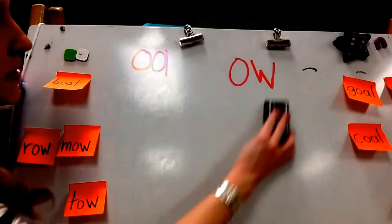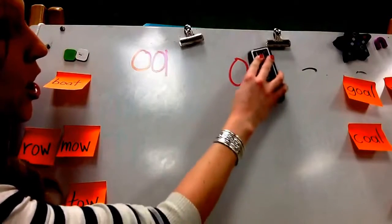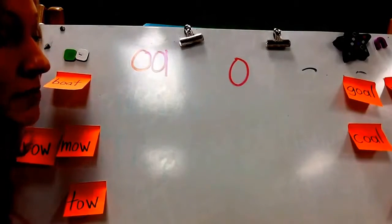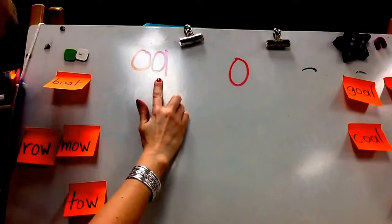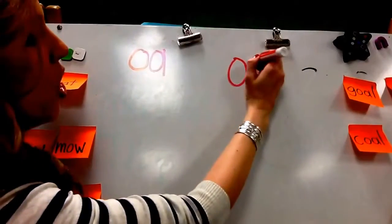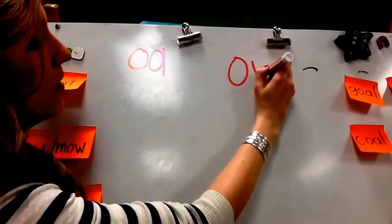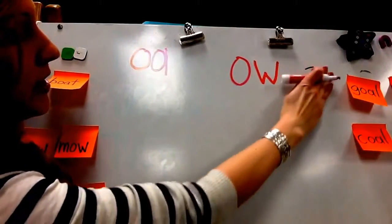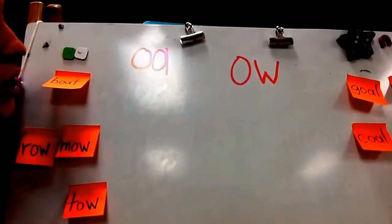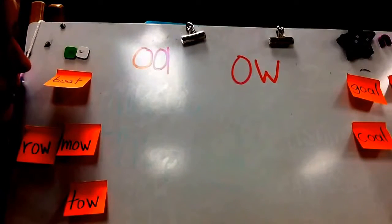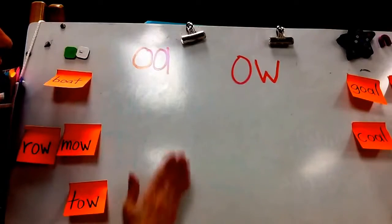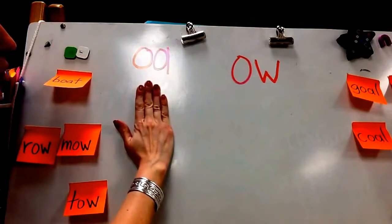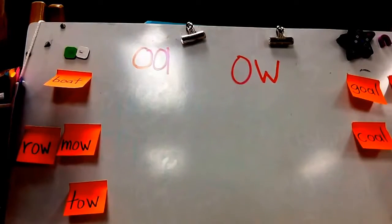We have learned that the O sound can be made in two ways: OA and also OW can make the O sound. So what you're going to be doing today is sorting some words that have O in it, either as OA or OW.